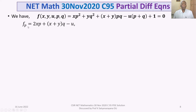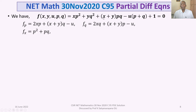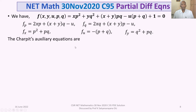F_p = 2xp + (x+y)q − u. F_q = 2yq + (x+y)p − u. F_x = p² + pq. F_y = q² + pq. F_u = −(p + q).